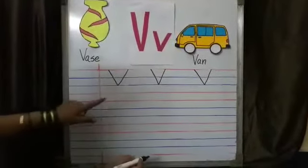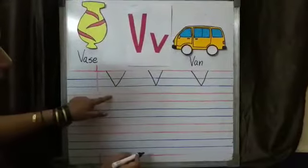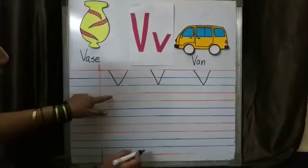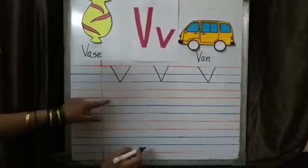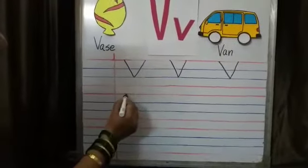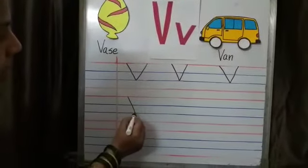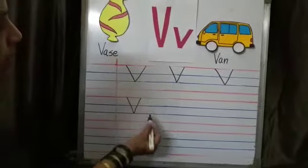Slanting line. We will not write on fourth red line. It is danger line. Again we will go on top red line. Top red line to blue line, slanting line. V.